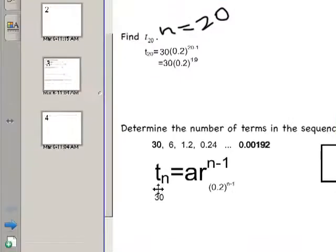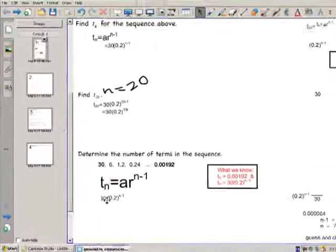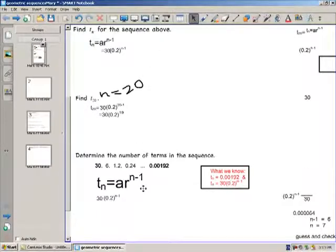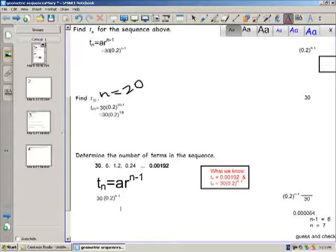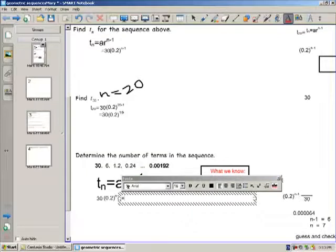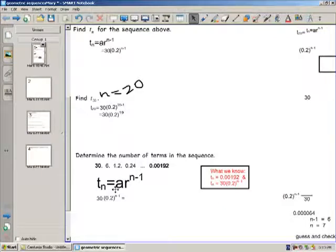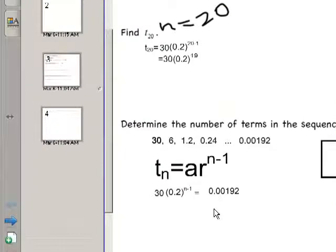Our Tn is 30 times 0.2 to the n minus 1. And then I will set that equal to 0.00192. So I am going to make that equal to the last term that we are interested in, 0.00192. Now, we have an equation. We are good at solving equations.